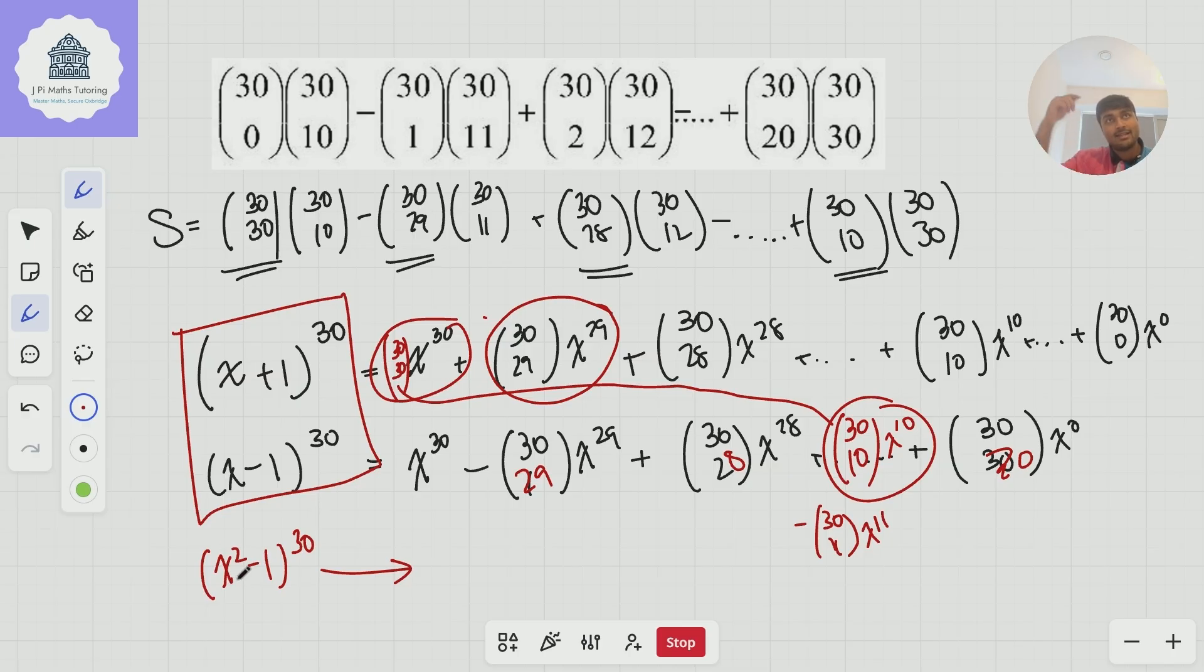So that's simply going to be 30 choose 20 times minus 1 to the 10. And that's going to be equal to 30 choose 20 or 30 choose 10. And that there would be my final answer. So this thing here is simply equal to 30 choose 10.